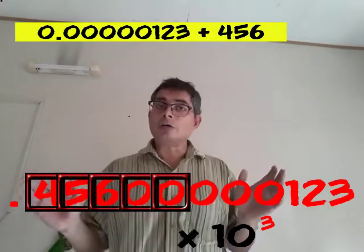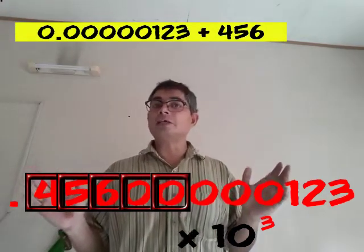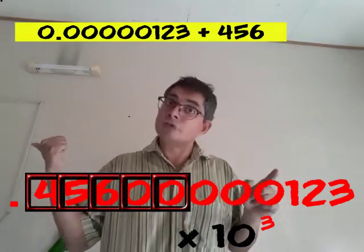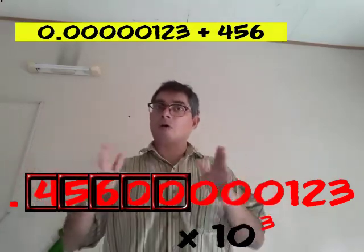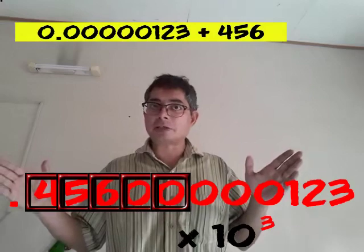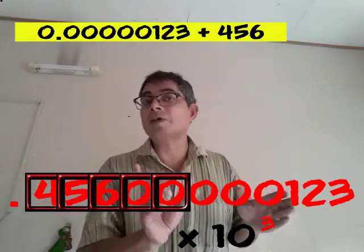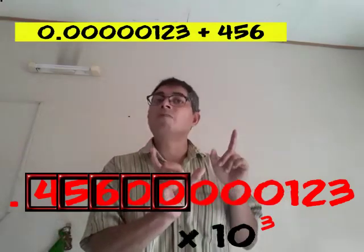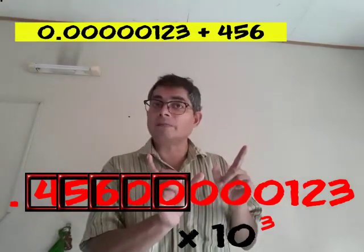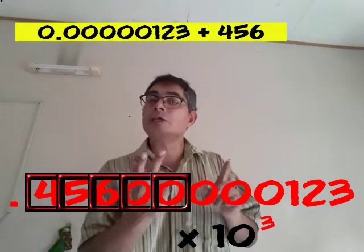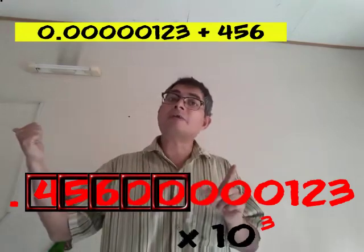So now you have got significant digits starting with that 4 and ending with that 3 of 1-2-3. You have lots of significant digits. But you can store only the 5 most significant of them. So it will store 4, 5, 6, 0, 0.